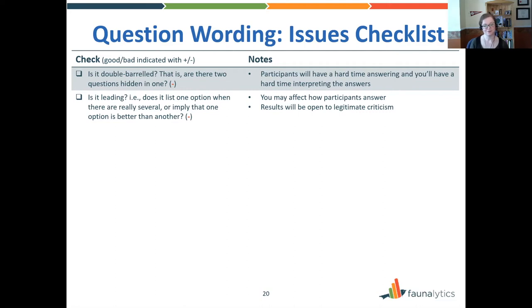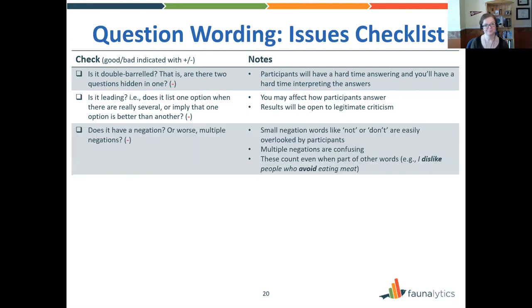Also think about whether a question is leading. For instance, 'Was this presentation good?' implies that good is the right answer, whereas asking 'Was this presentation good or bad?' with a range of options gives equal weight to all possibilities. Watch out for negation words — especially small ones like 'not' or 'don't' — because if someone is completing your survey quickly, it's easy to miss those small words. Putting them at the front of your sentence is helpful because people pay more attention when starting. Avoid having those small words if you can, or make them bold or capitalized. Definitely avoid multiple negations — never have more than one in a sentence, including combinations like 'I dislike people who avoid eating meat,' which has two negative words and can get confusing.